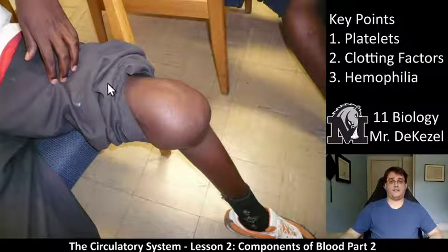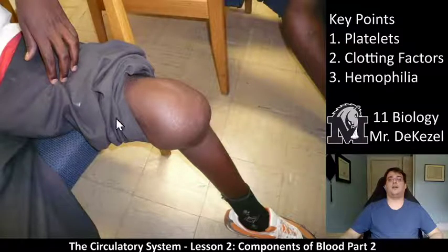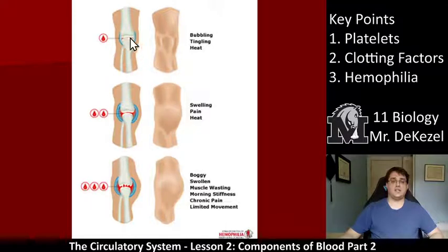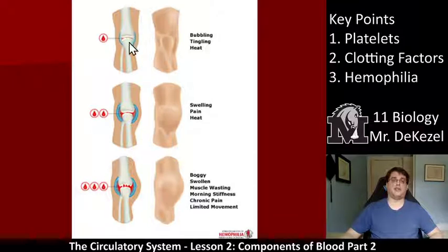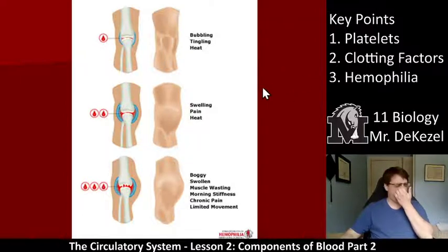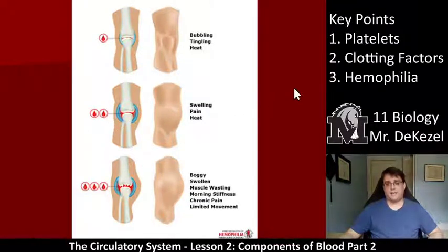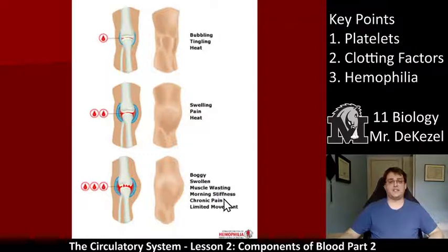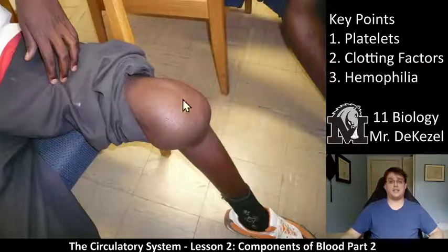Something seen quite regularly in hospitals is a very swollen knee. What happens is that between the joints there's an injury and fluid builds up. With a normal injury you might get tingling, heat, and some swelling, but it would clear. However, key point three: if you have hemophilia, clotting can't happen. So you get more and more blood in the injury, resulting in a boggy, swollen area with muscle wasting, stiffness, chronic pain, and limited movement if it isn't drained.